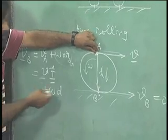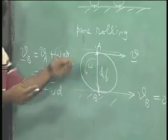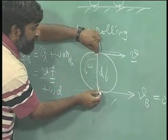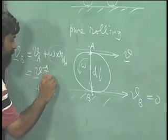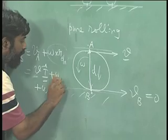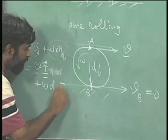Remember is it this way or that way? If omega is like this, it has to be counterclockwise which means that the point B should be moving in the counterclockwise direction, which means positive direction omega times D times I vector.